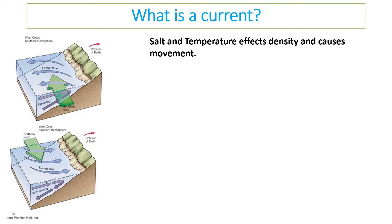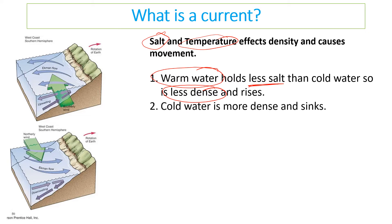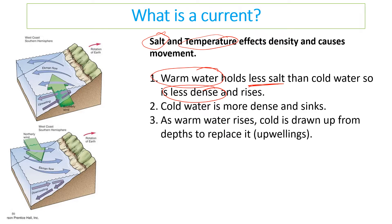The two main factors that affect currents are the concentration of salt — whether it's fresh water or salt water — and temperature, because these affect the density of water. Warm water holds less salt than cold water, so warm water becomes less dense. Cold water becomes more dense and will sink as a result.